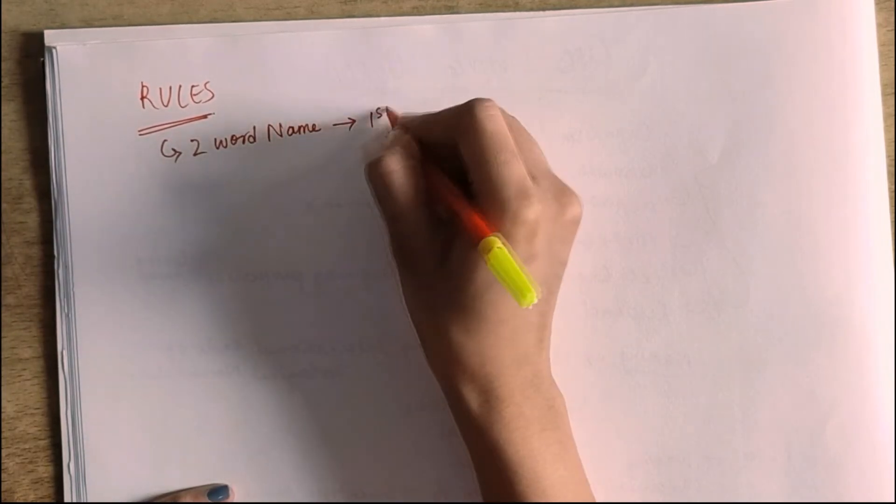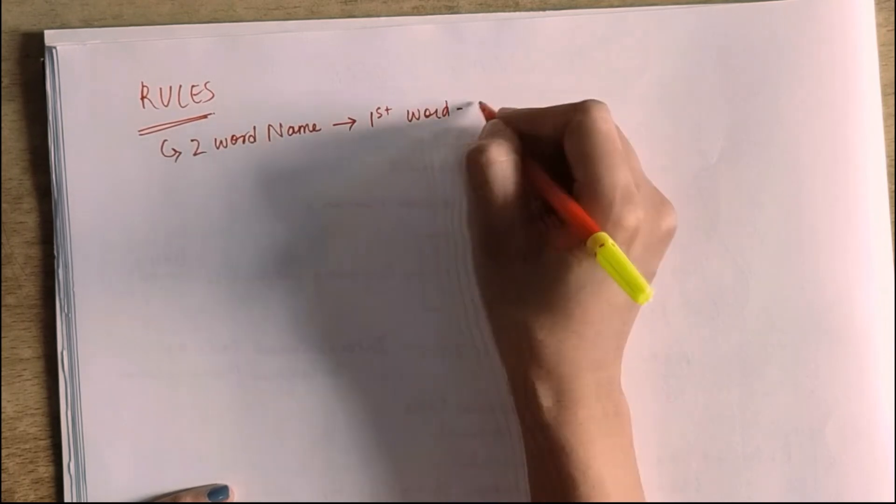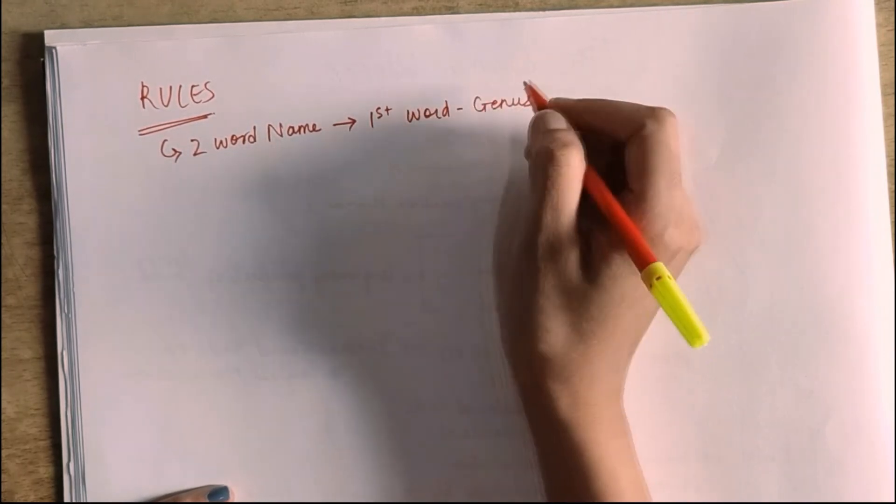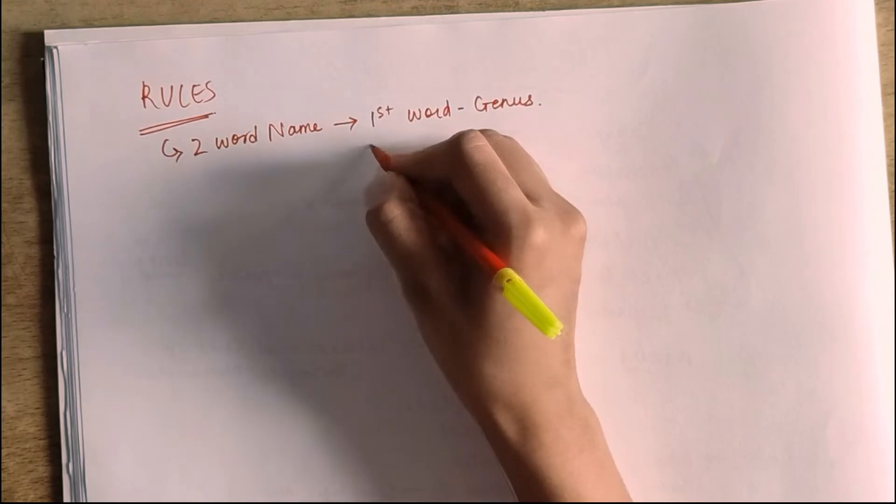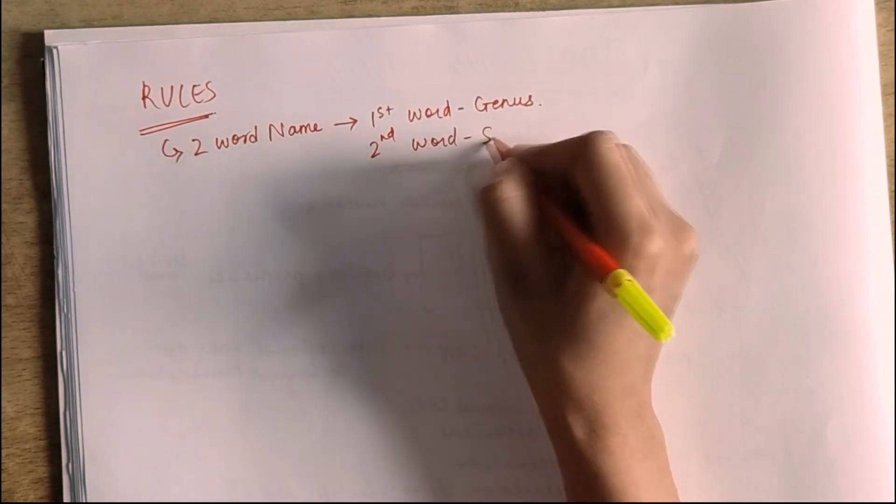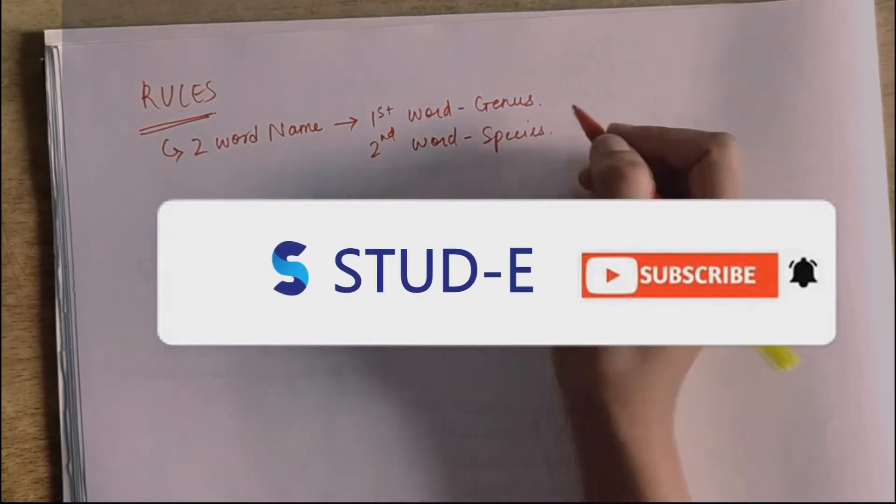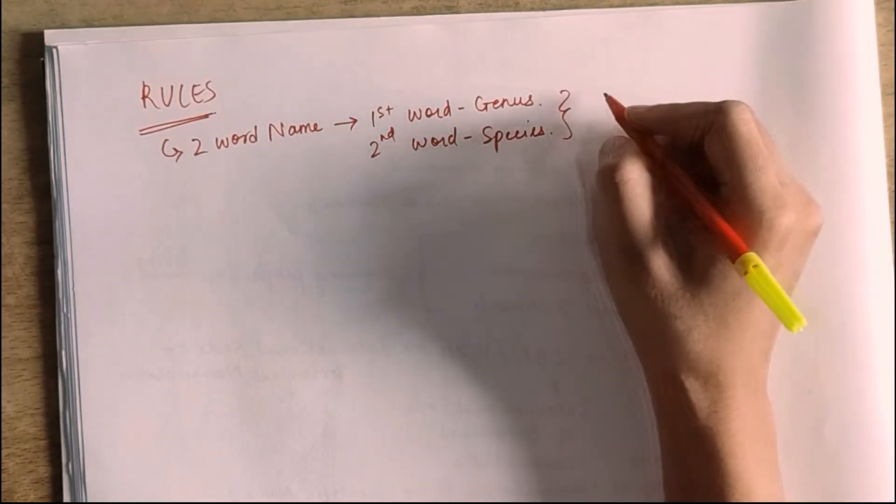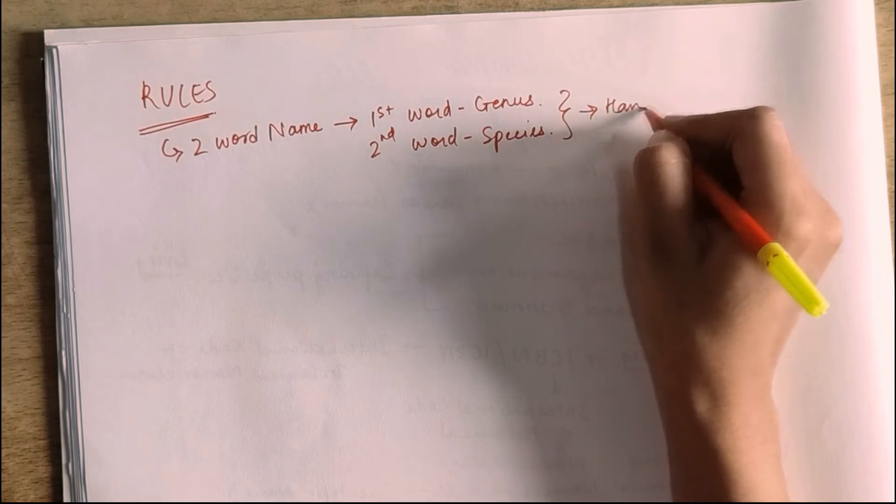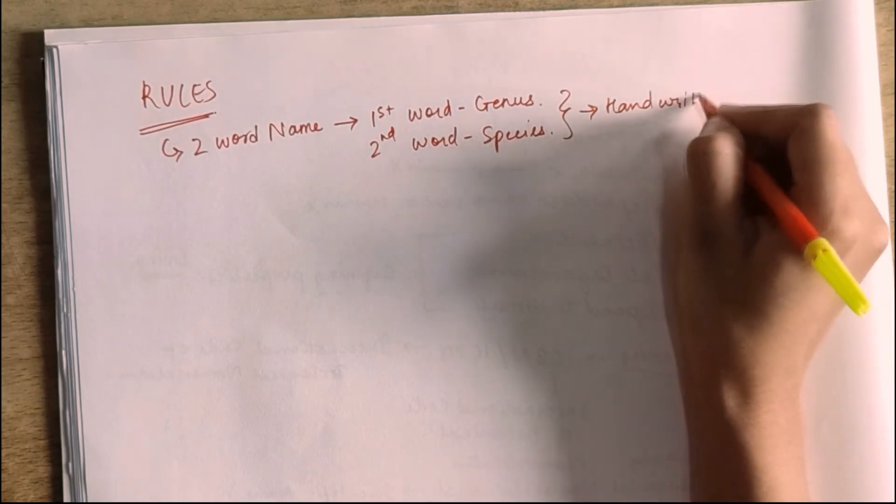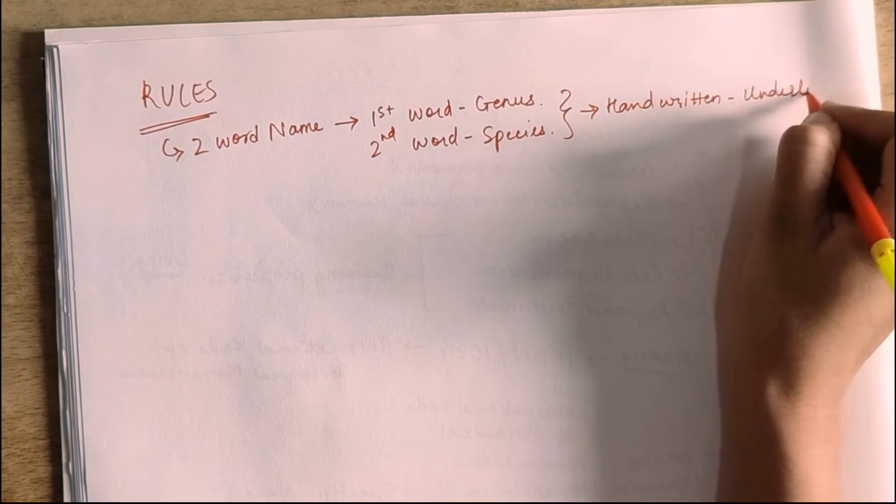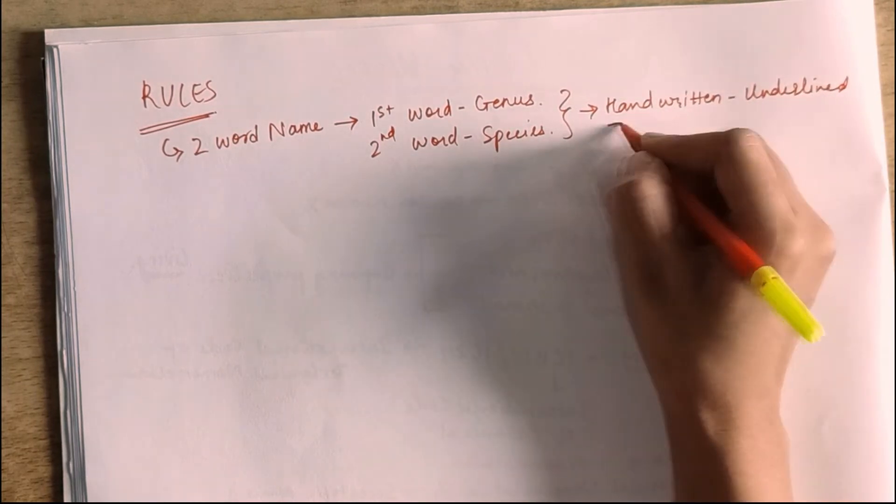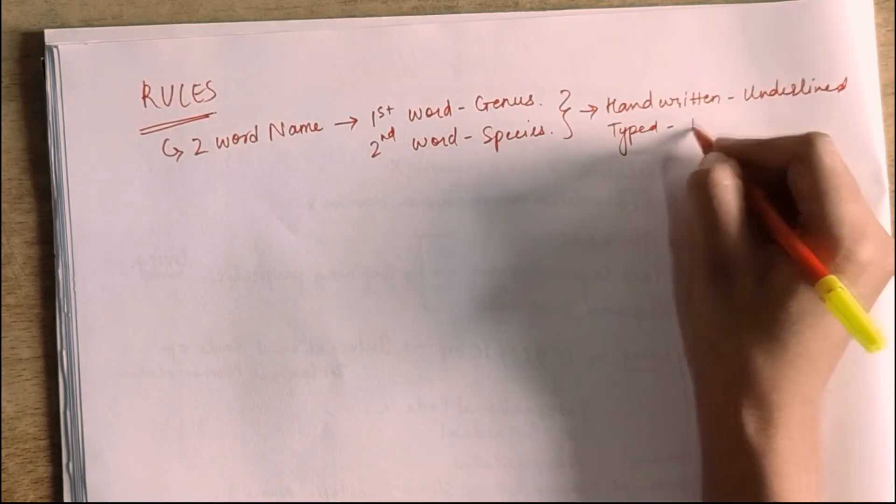And the first word will be the genus - which genus the organism or species belongs to. And the second word is the species. Which species the organism belongs to. These both words, whenever they are handwritten, they will be underlined. And if they are typed, they will be italic.